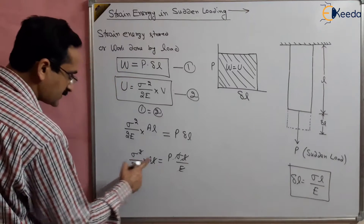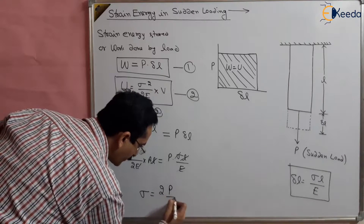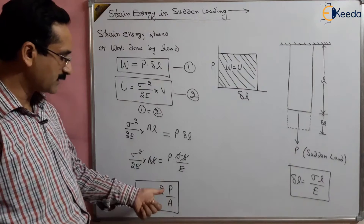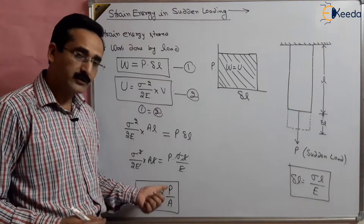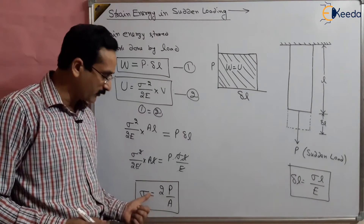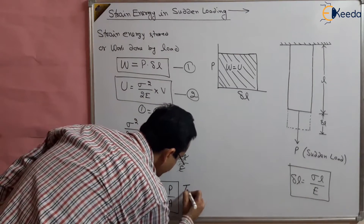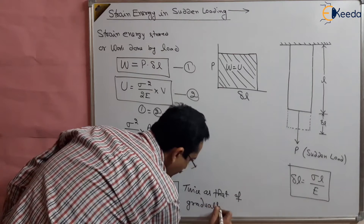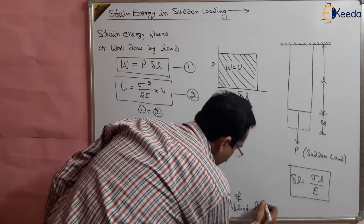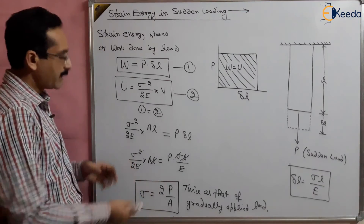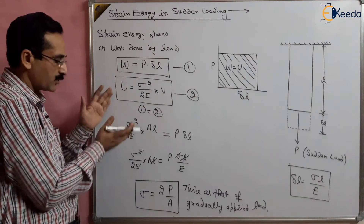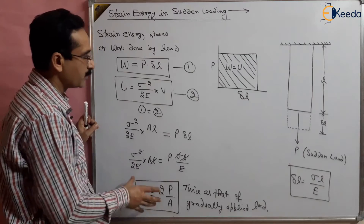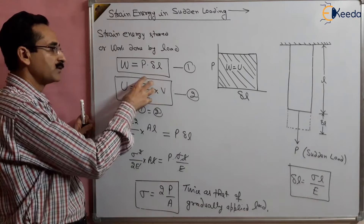What is left is that the stress equals 2P divided by area. So the stress developed is 2 times the load upon area. This is double the gradually applied load — the stress due to sudden load is twice that of the gradually applied load. This is how we find the stress using strain energy, and this stress equation can be used to find the total strain energy stored in the material due to sudden loading. Thank you.